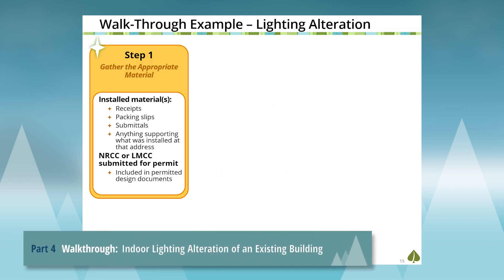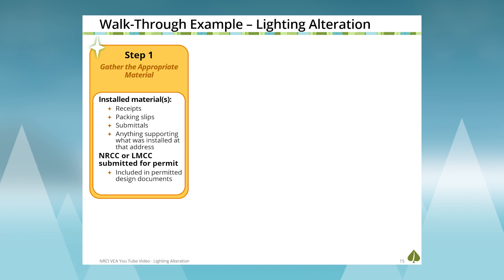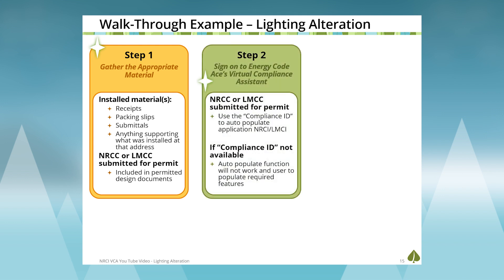Let's walk through an example of using the Virtual Compliance Assistant with this three-step process. The first step is to gather the appropriate material for the project — receipts of lighting controls, lighting fixtures being installed, packing slips, approved submittals, anything that supports what is being installed for the project specific to that address. You will need the LMCC form because you need a compliance ID for the Virtual Compliance Assistant's pre-population tool.